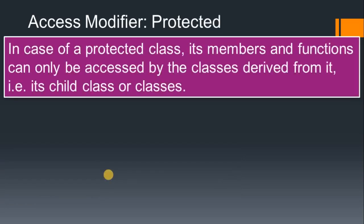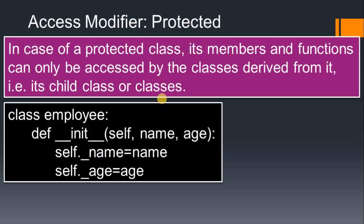The next access specifier is protected. In the case of protected, the class members and functions can only be accessed by the class derived from it — that is, its child class or classes. If you are using the protected access specifier, you can use that content in the derived classes. We use a single underscore to denote protected variables.